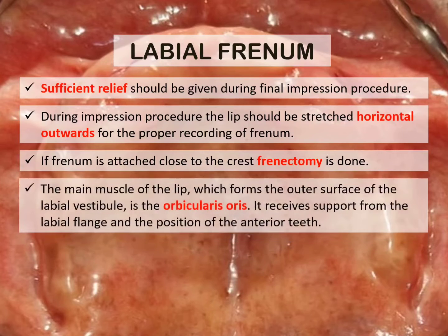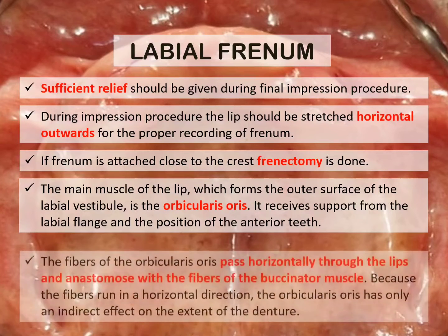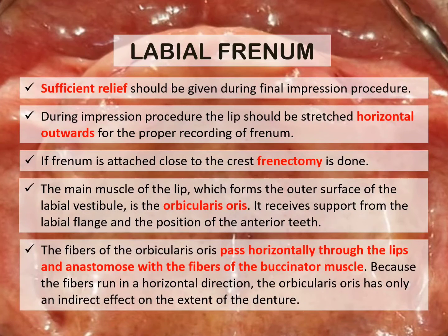The main muscle of the lip forming the outer surface of the labial vestibule is the orbicularis oris. It receives support from the labial flange and the position of the anterior teeth. The fibers of the orbicularis oris pass horizontally through the lips and anastomose with the fibers of the buccinator muscle. Because the fibers run in a horizontal direction, the orbicularis oris has only an indirect effect on the extent of the denture.